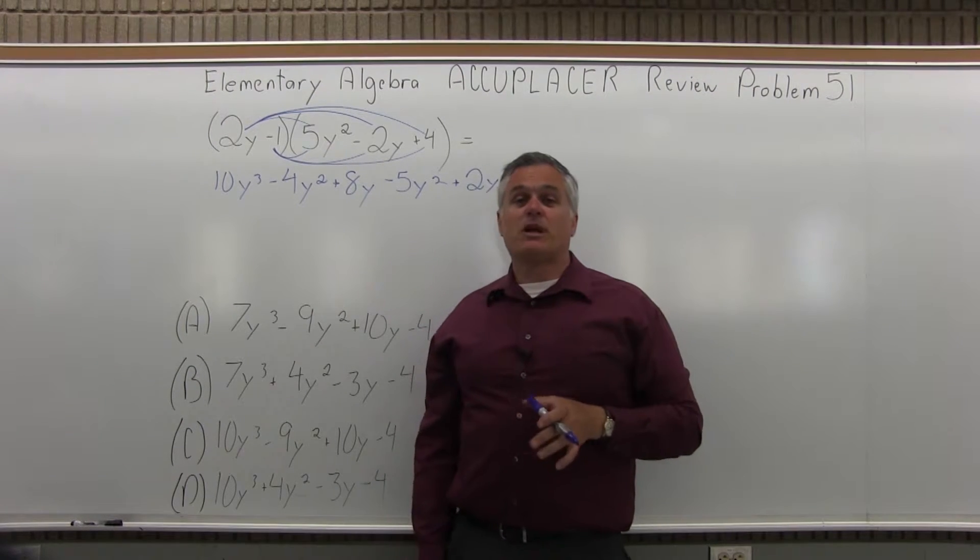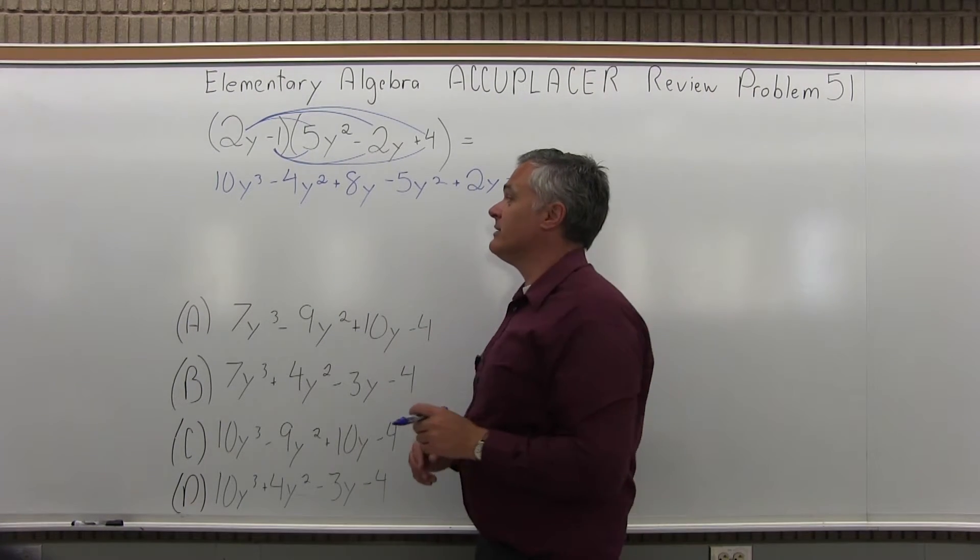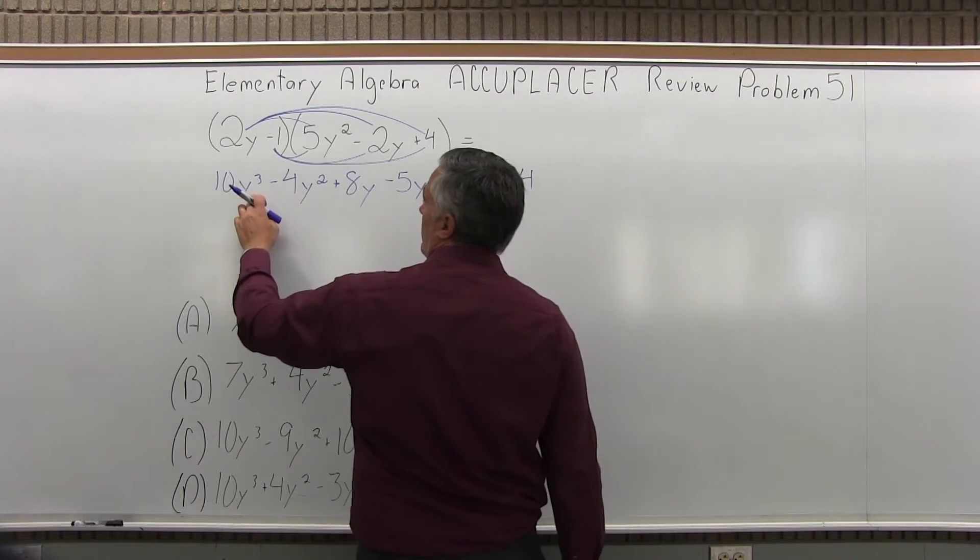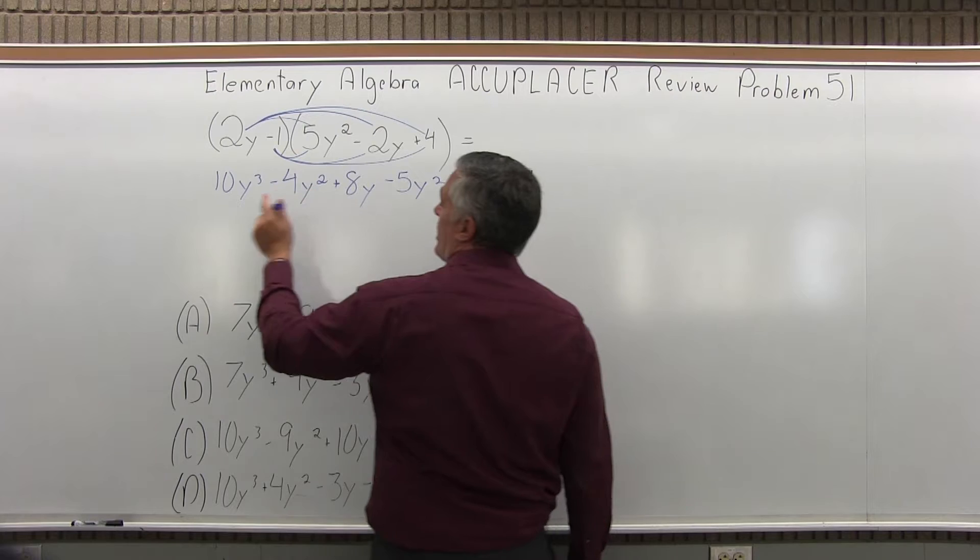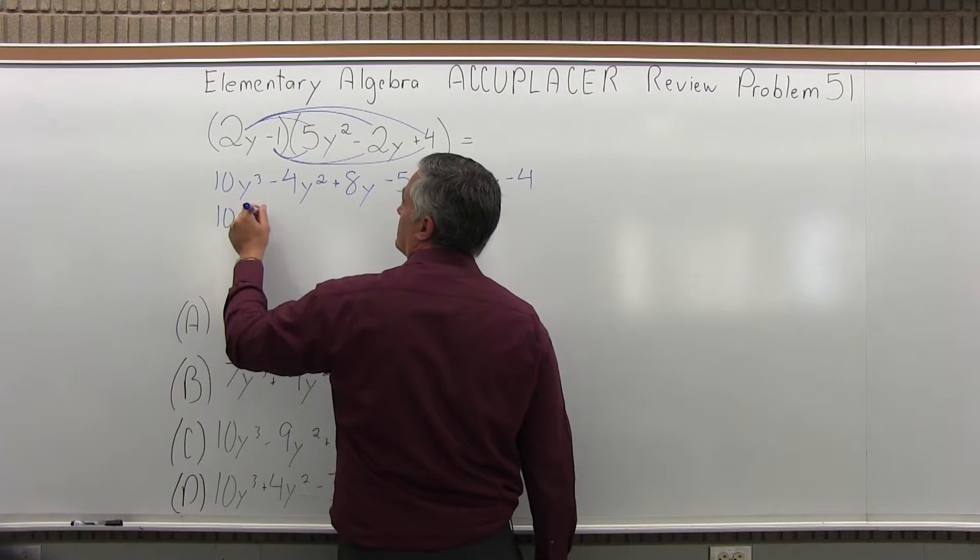So now I've multiplied everything out. Now I have to combine whatever can be combined. Starting with the 10y cubed, as I look through the rest of my answer, there are no other y cubes. So the 10y cubed is done just the way it is.